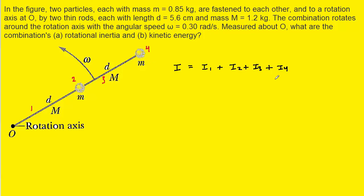We can deal with Objects 2 and 4 first, because those are particles, and their rotational inertias are relatively easy to calculate. The equation for the rotational inertia of a particle is just the mass of the particle times a distance squared.